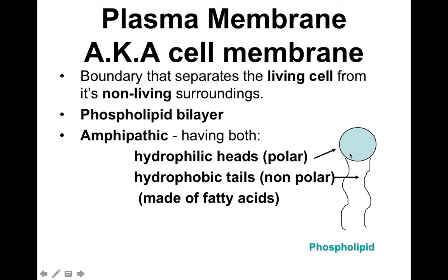One layer has the heads on top and tails pointing inward, and underneath is another layer with heads facing outward and tails toward the inside. You'd have two layers of these structures facing in opposite directions — 'bi' means two, so it's two layers of phospholipids.